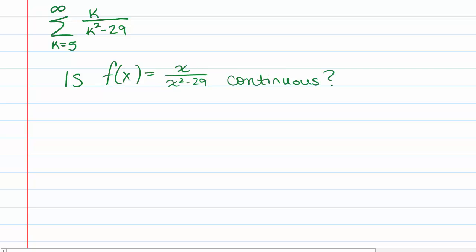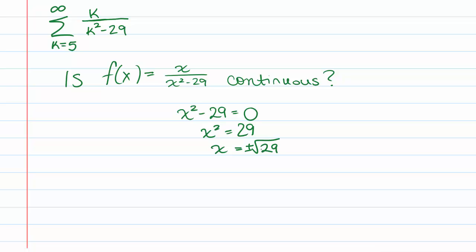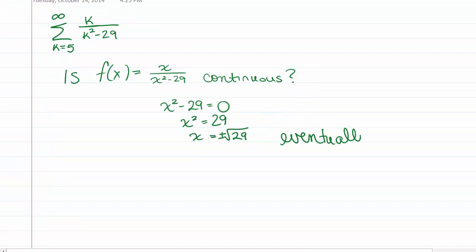The only place it might not be continuous is when the denominator is zero. Setting x squared minus 29 equal to zero gives x squared equals 29, so x equals plus or minus the square root of 29. So we have two points of discontinuity, but remember we just want this to eventually be continuous, positive, and decreasing. So it is eventually continuous. We'll define what 'eventually' means when we've checked all the criteria.